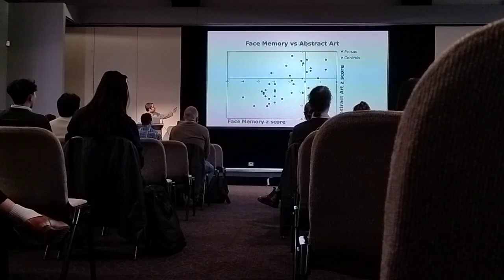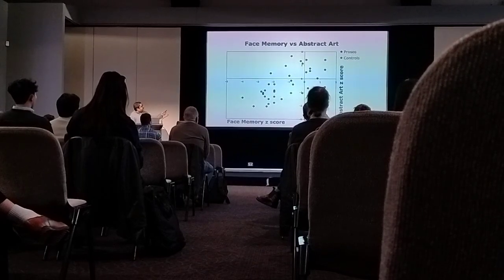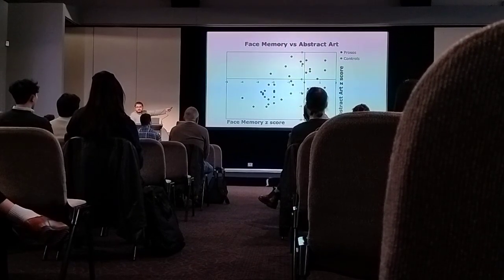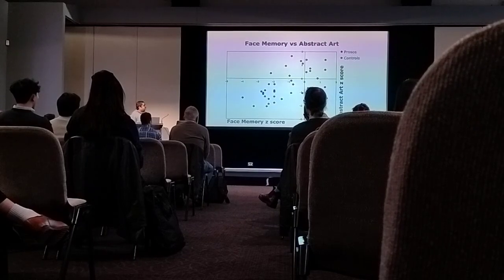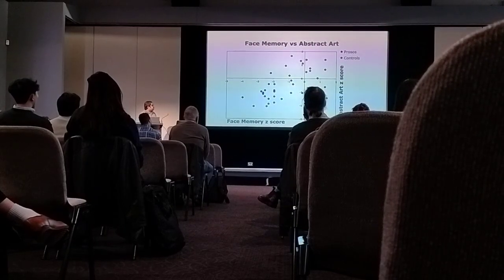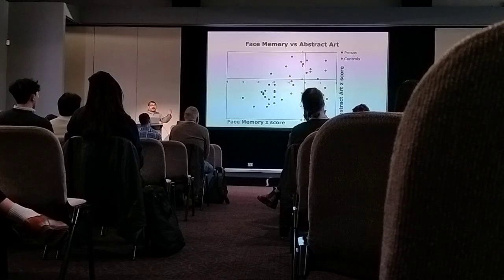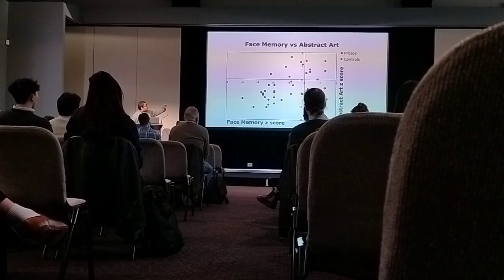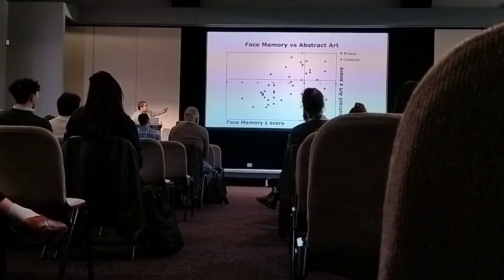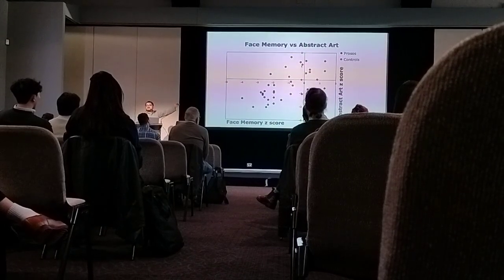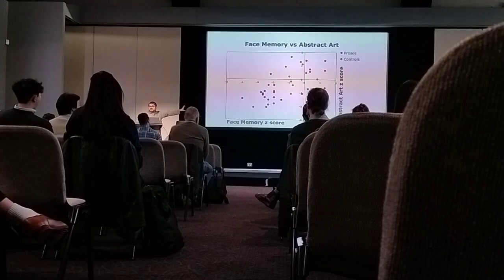Let's go to results. This is from the abstract art test. The prosopagnosics are shown in blue, and red are the controls. As usual, face memory is really bad for the prosopagnosics — face memory here is measured by the CFMT, the Cambridge Face Memory Test. When it comes to abstract art, they seem to be also worse. So that's interesting — I'll do more with the cases.